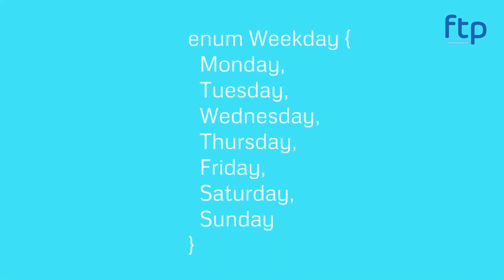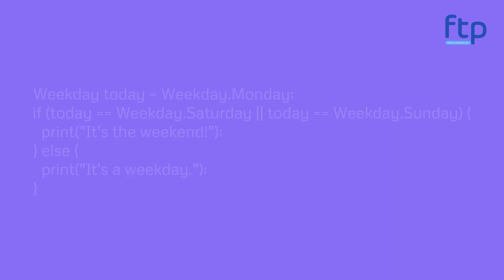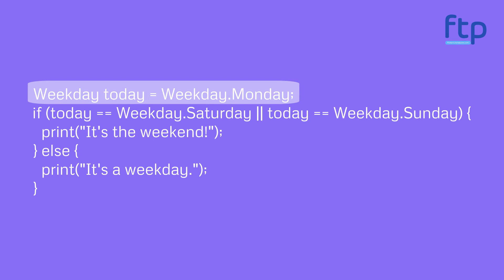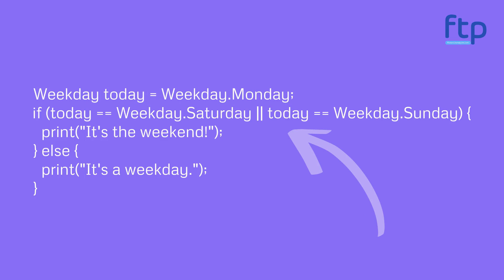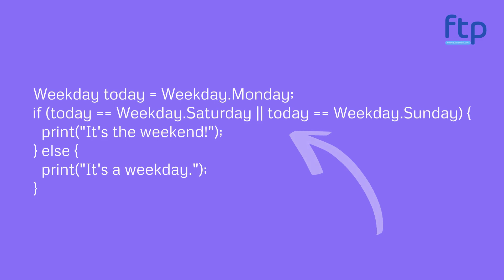Here is another example of using an enum in Flutter. This code defines an enum called weekday, which has seven enumerators, one for each day of the week. Then it creates a variable called today, and assigns it the value weekday.monday. The conditional statement checks if today is either weekday.saturday or weekday.sunday and prints 'it's the weekend'. Otherwise, it will print 'it's a weekday'.